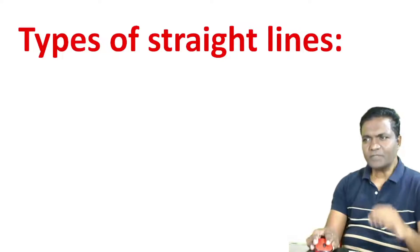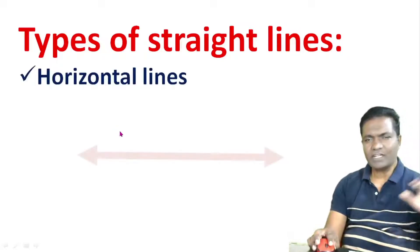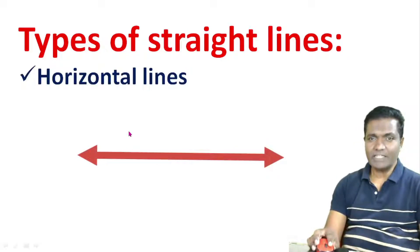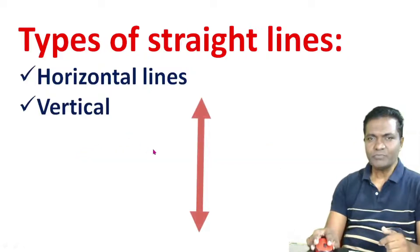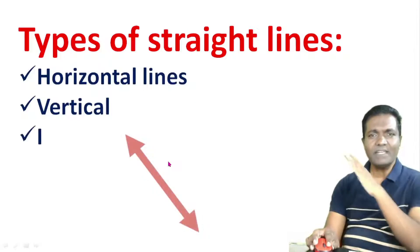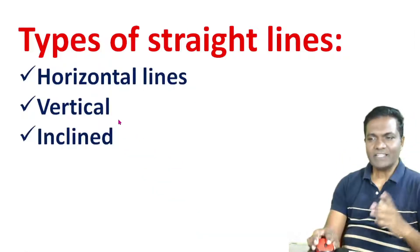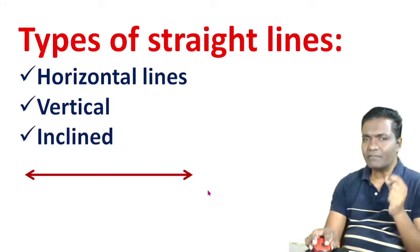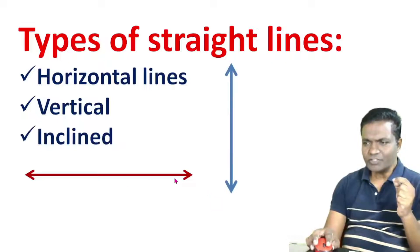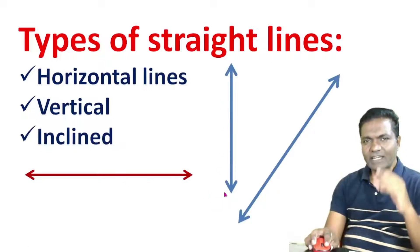Types of straight lines — they can be horizontal, they can be vertical, and they can be inclined. So these are the three types of straight lines that we find. Horizontal and vertical lines are not inclined.